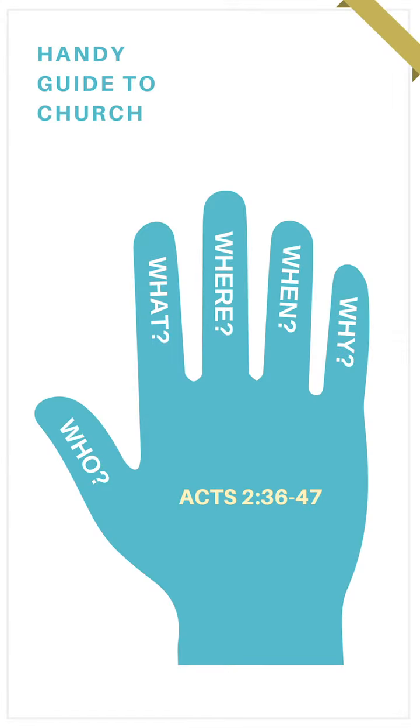This Handy Guide answers five questions — who, what, where, when, and why — which you may remember from eighth grade English grammar. We're going to look at a passage in Acts chapter 2, verses 36 to 47, in which Peter stands up after the Holy Spirit has been poured out. There's mass confusion, people are assuming the believers must be drunk, and Peter brings order to it and the church is formed. These few verses answer those five questions about the function of church.